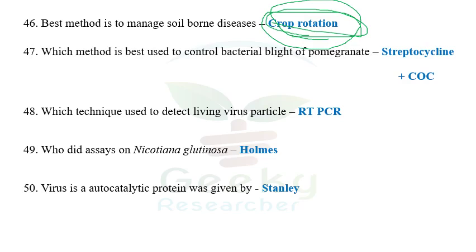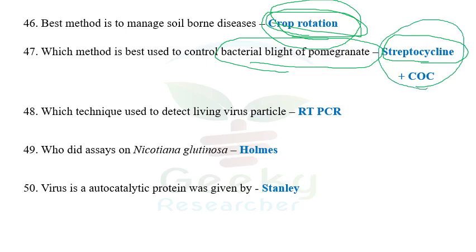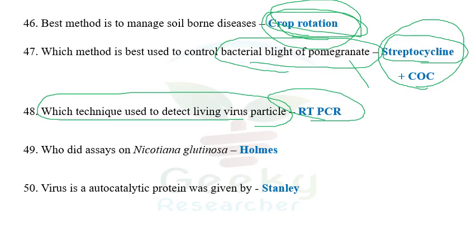The next question: which method is best used to control bacterial blight of pomegranate? To control bacterial blight of pomegranate, the combination of streptocycline along with copper oxychloride is the best management practice. Bacterial blight of pomegranate is caused by Xanthomonas axonopodis pv. punicae, which is very important. The next question: which technique is used to detect living particles of plant virus? The answer is RT-PCR.